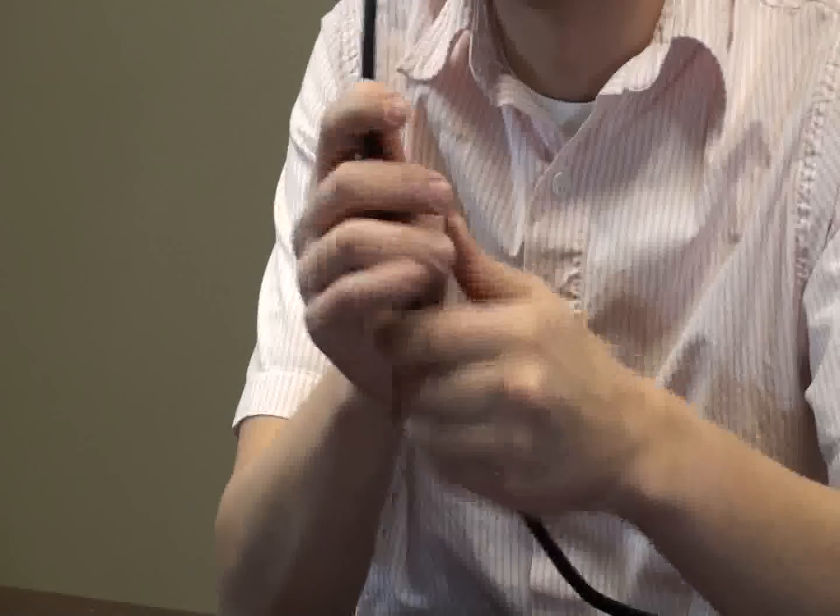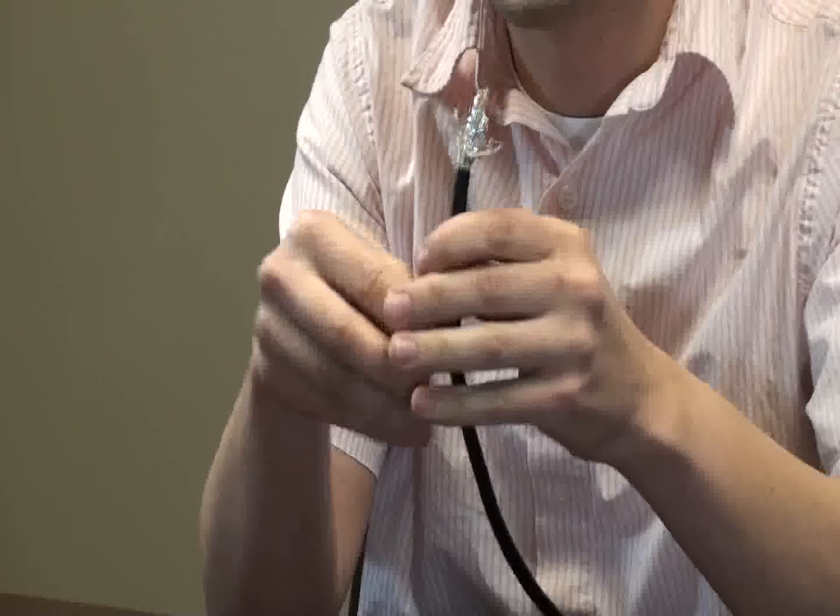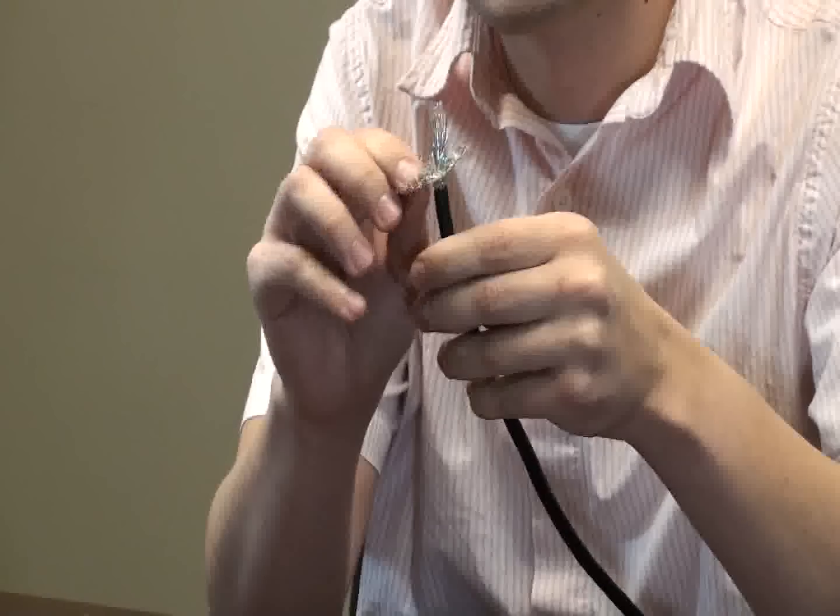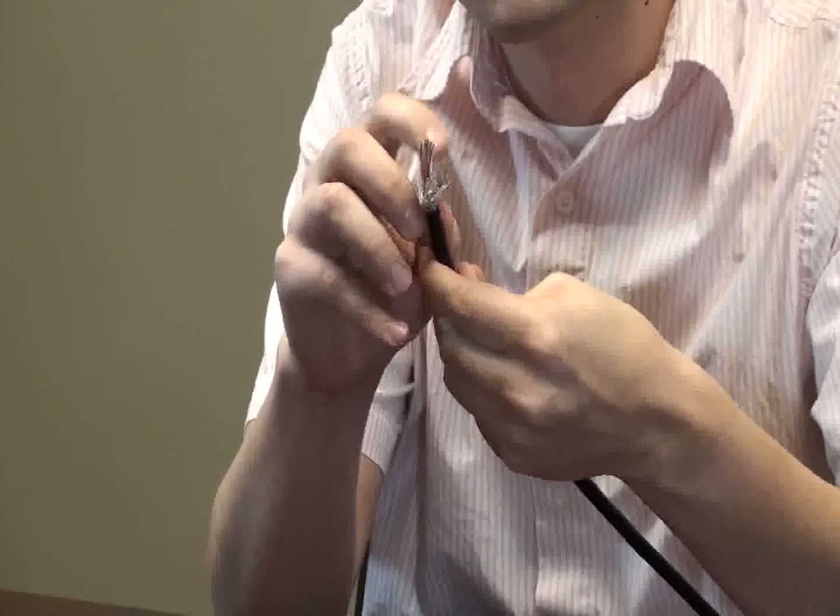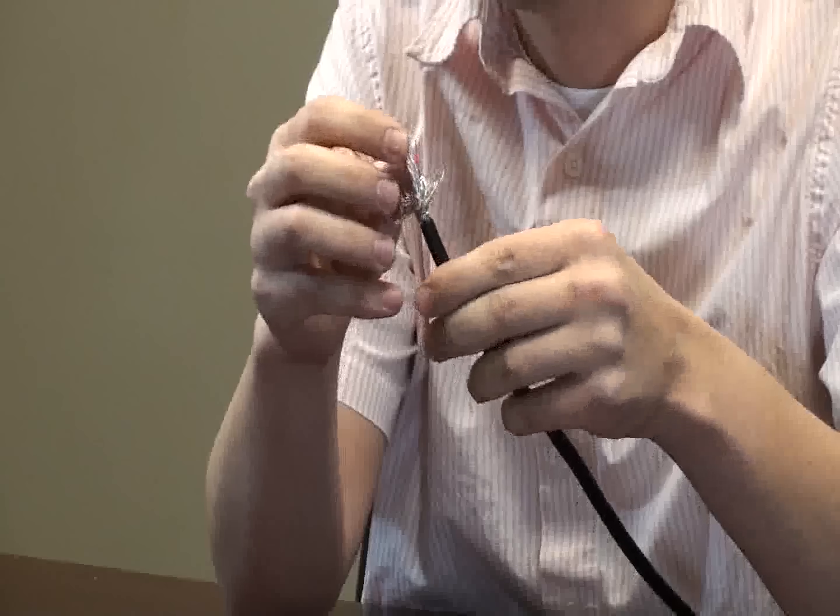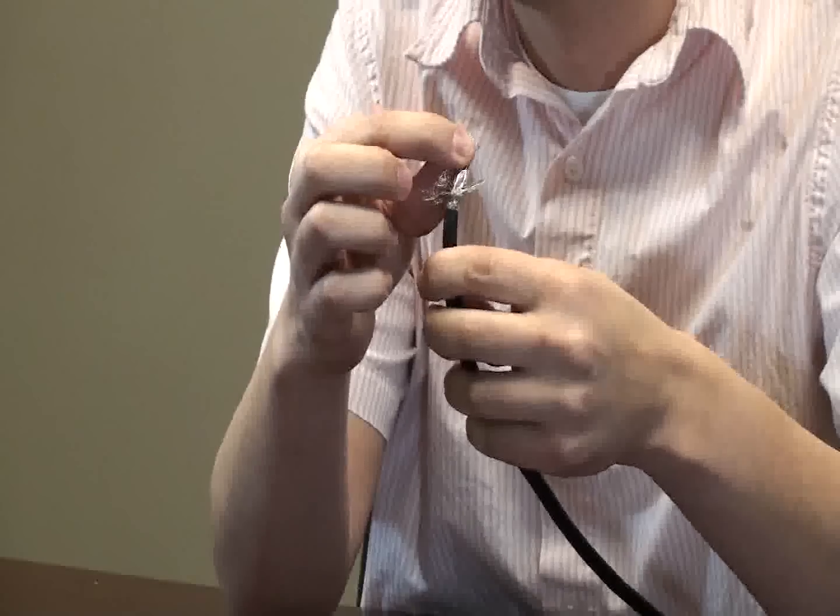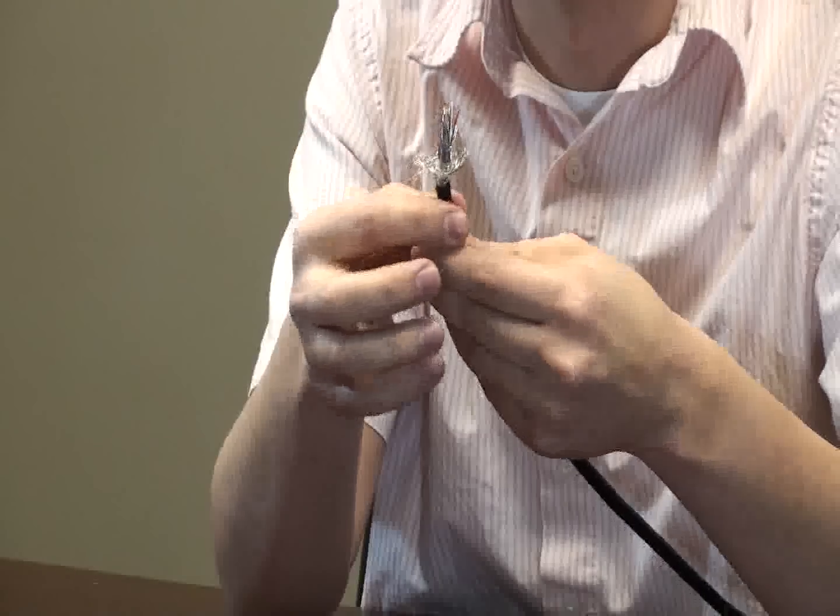This one, which you'd probably find for around 40 bucks, has a lot more shielding and much thicker conductors. This shielding is called braided shielding. This is the foil shielding on the inside. And then there's more shielding around each of the conductors, more foil shielding. And the conductors are nice and thick, 24 gauge.